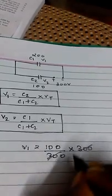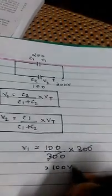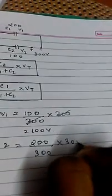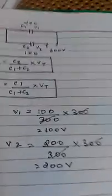And V2 is equal to C1, C1 is 200, by total capacitance 300 into 300. This got cancelled, this is 200 volt. So this way you can solve this voltage V1 and V2.